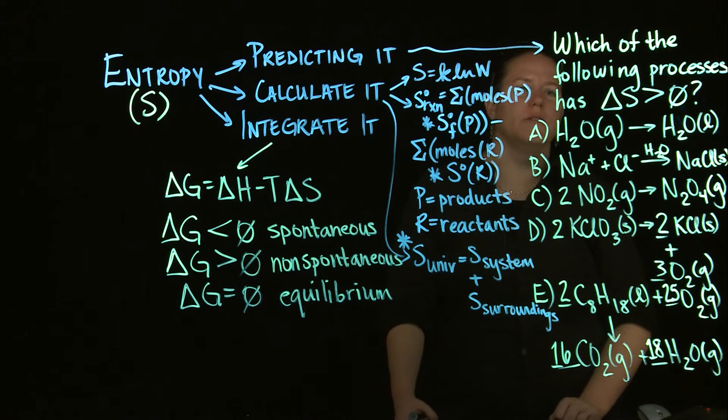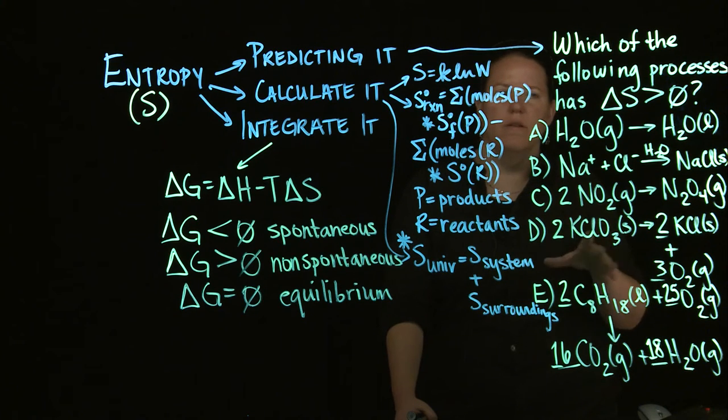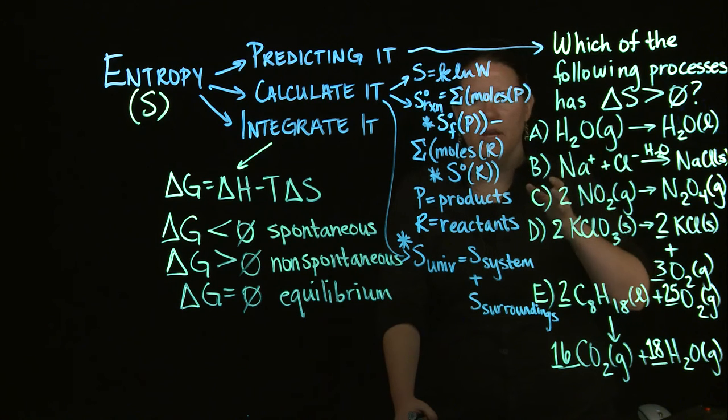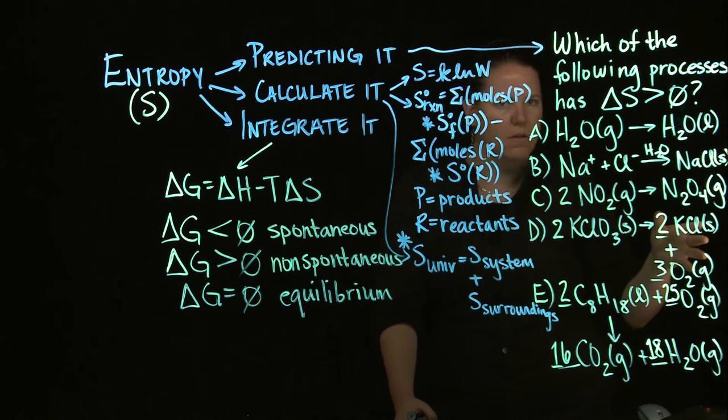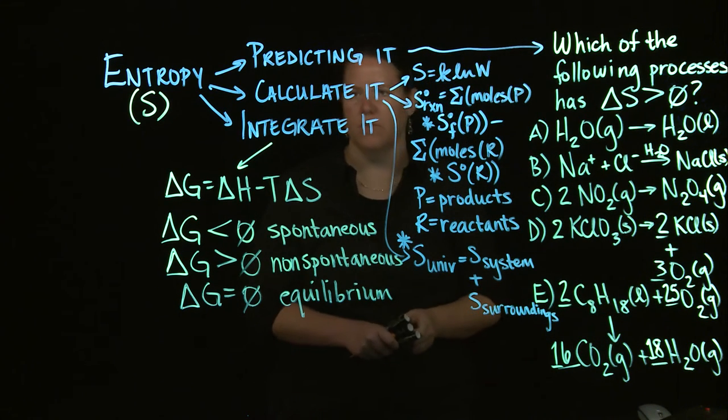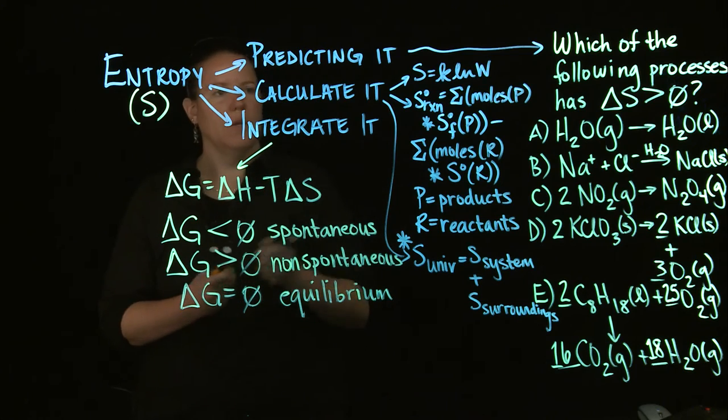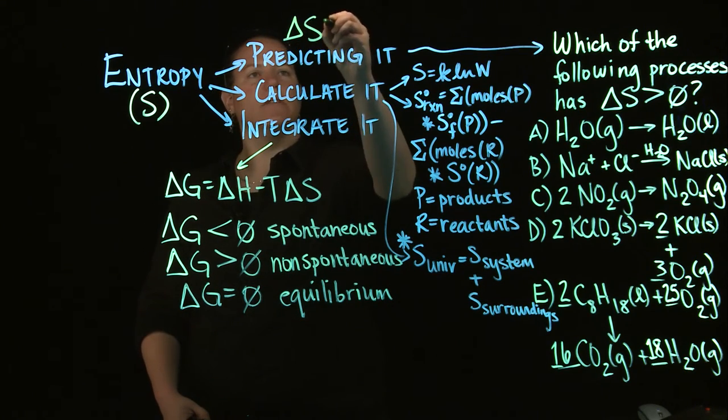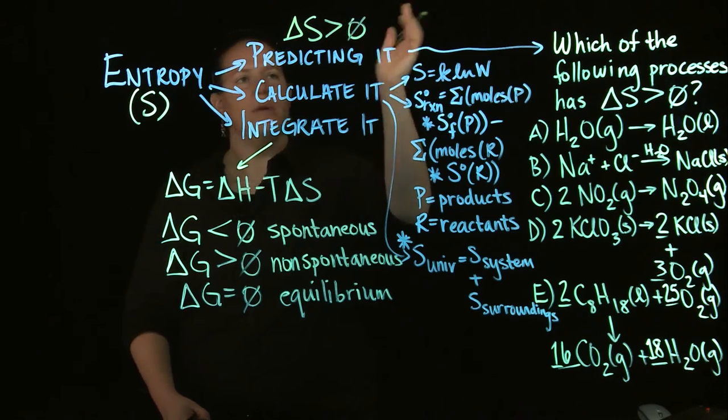So here's which of the following processes has delta S greater than zero. Now, the question is, what does delta S greater than zero mean? Does that mean that I'm increasing in disorder or am I decreasing in disorder? That's really the next question. So to do that, we need to have a sense. If delta S is greater than zero, what does that mean?